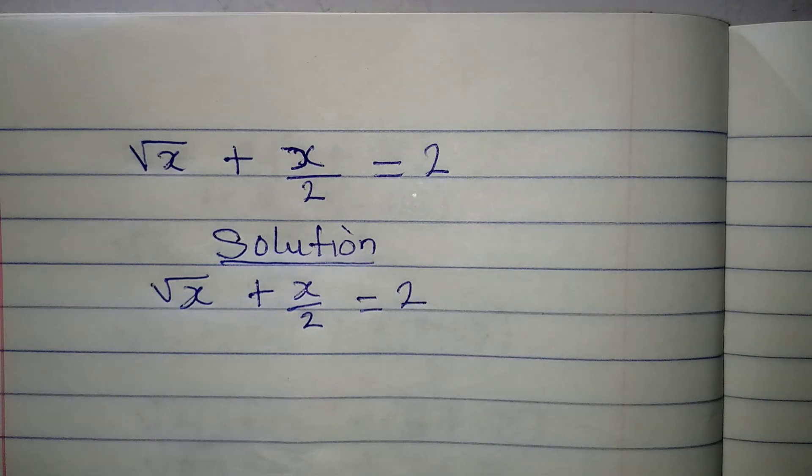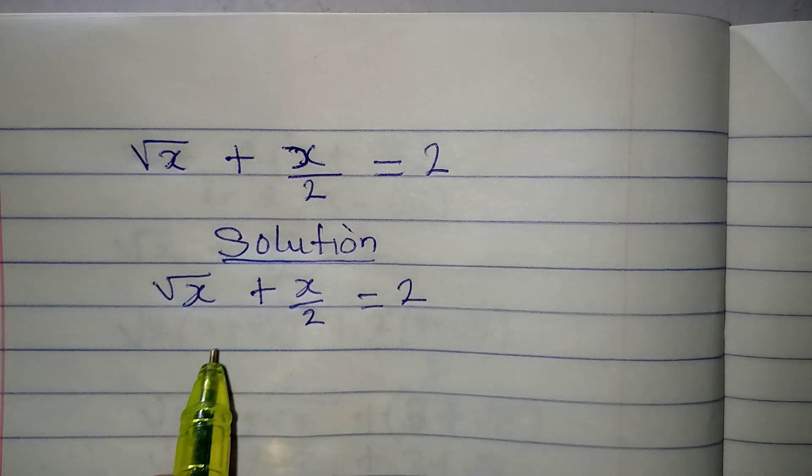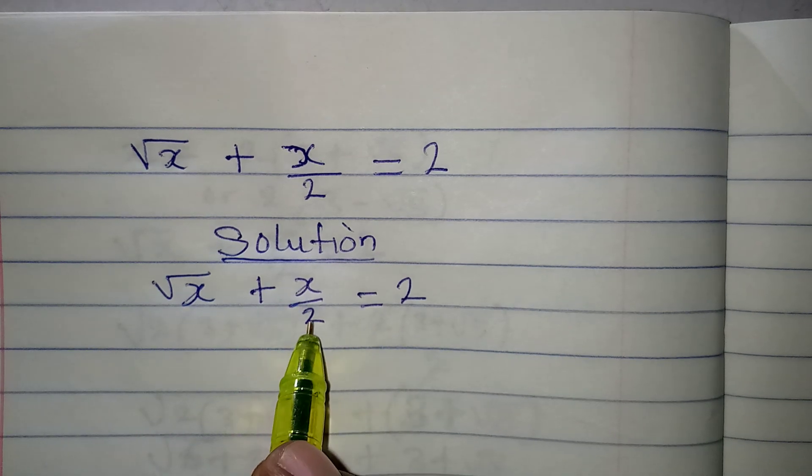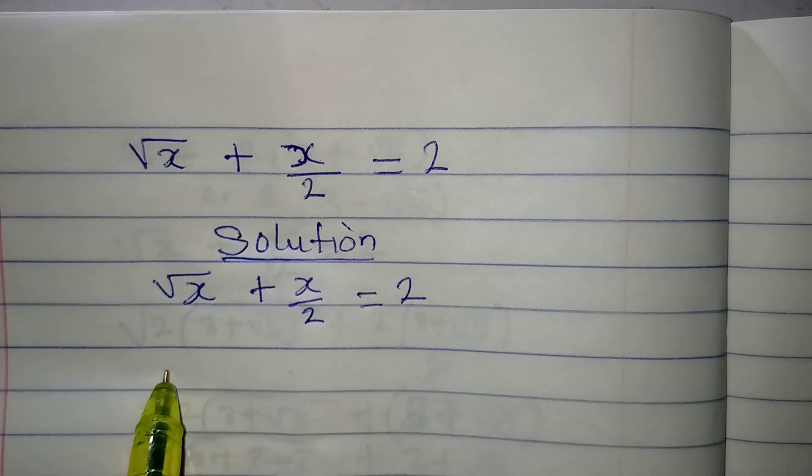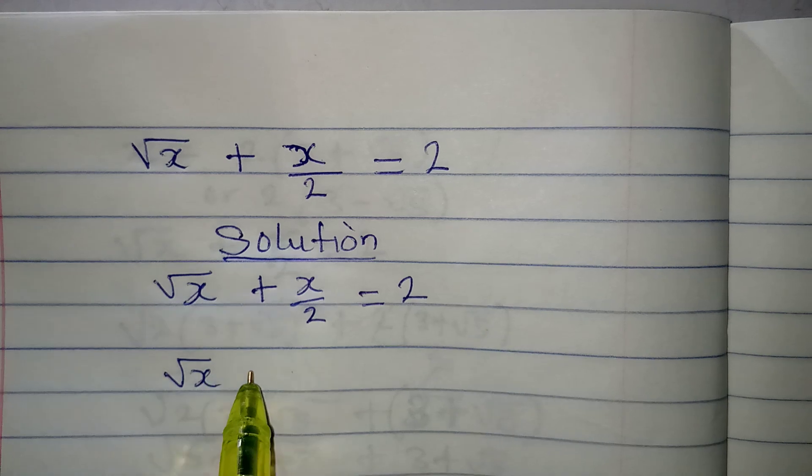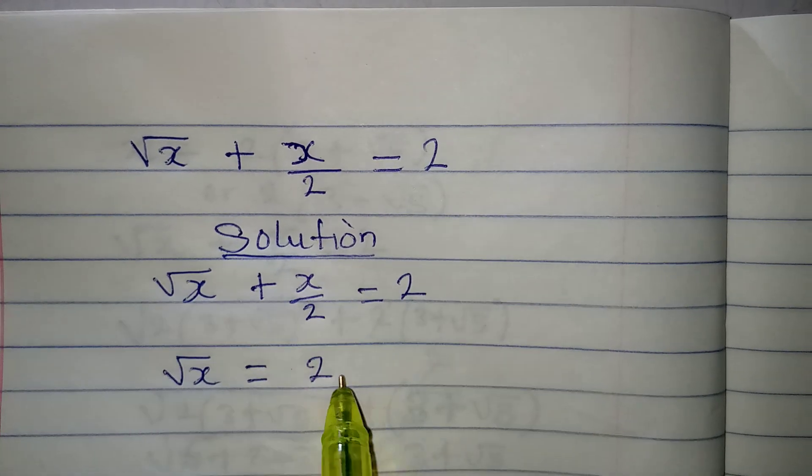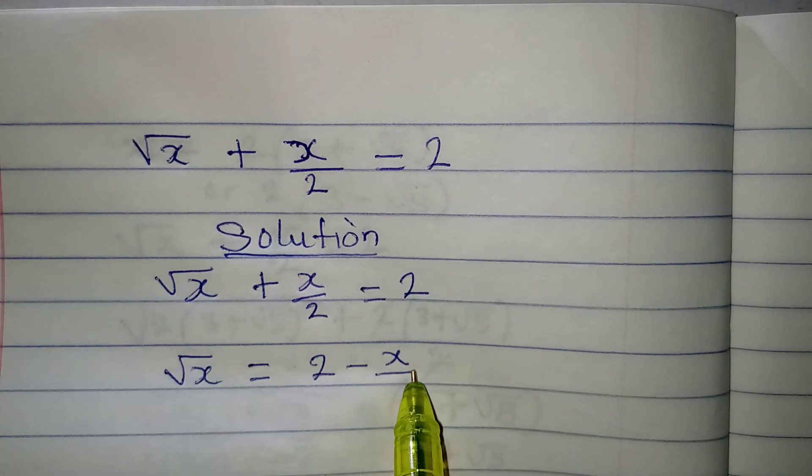Now this is what I want us to do: take x over 2 to the right. So we are going to have square root of x to be equal to 2 minus x over 2.